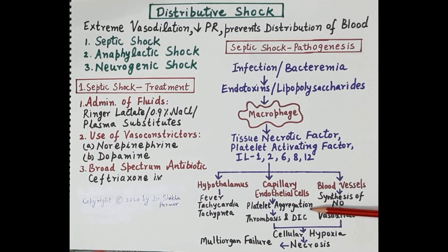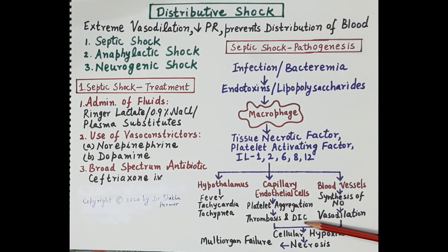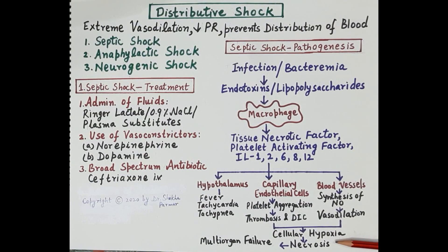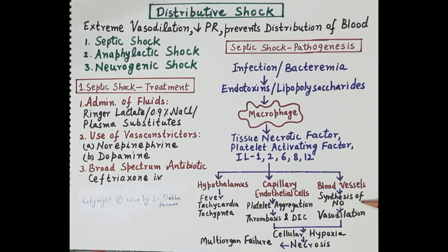Platelet aggregation leads to clot formation within blood vessels — termed thrombi — resulting in thrombosis and disseminated intravascular coagulation (DIC). Blood vessels containing thrombi are unable to supply blood to tissues, causing cellular hypoxia and ischemia. Additionally, inflammatory mediators stimulate synthesis of nitric oxide, causing excessive vasodilation, reduced peripheral resistance, reduced blood pressure, and further cellular hypoxia.